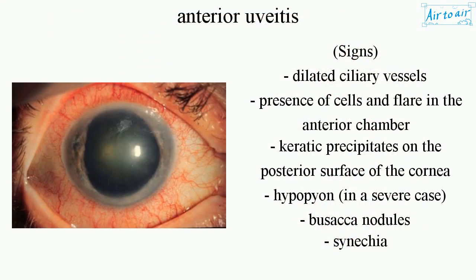Signs include dilated ciliary vessels, presence of cells and flare in the anterior chamber, keratic precipitates on the posterior surface of the cornea, hypopyon in severe cases, Busacca nodules, and synechiae.